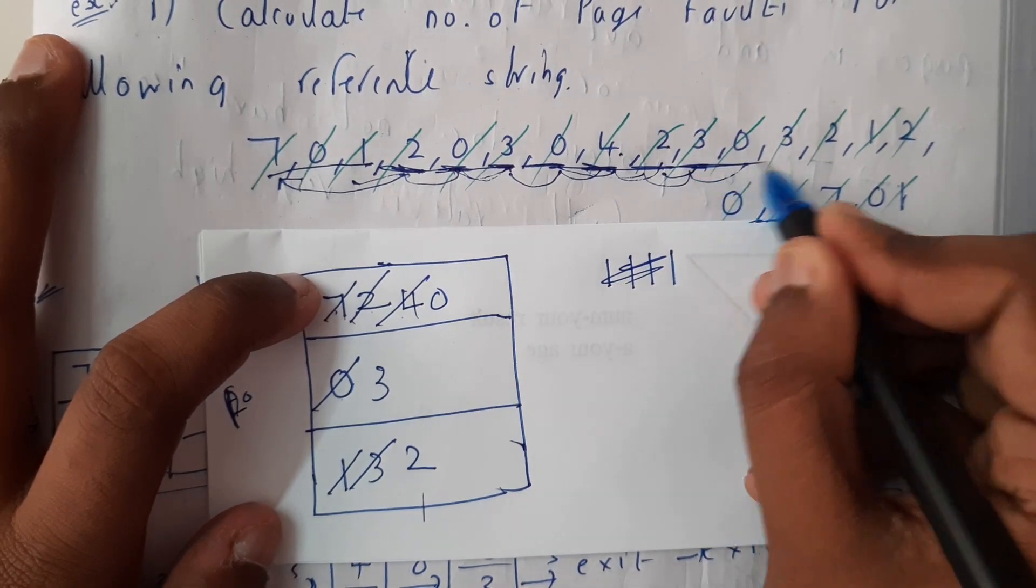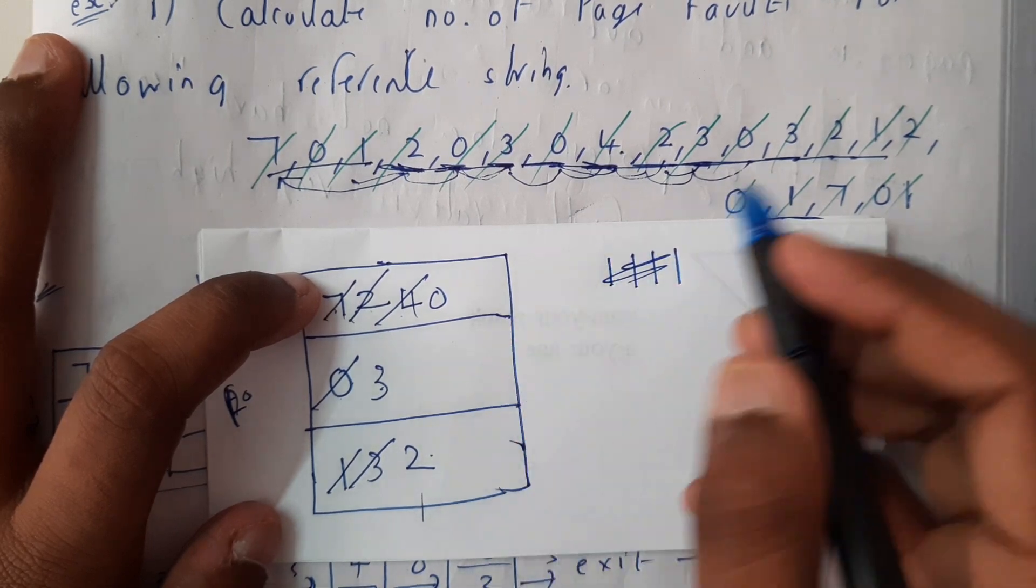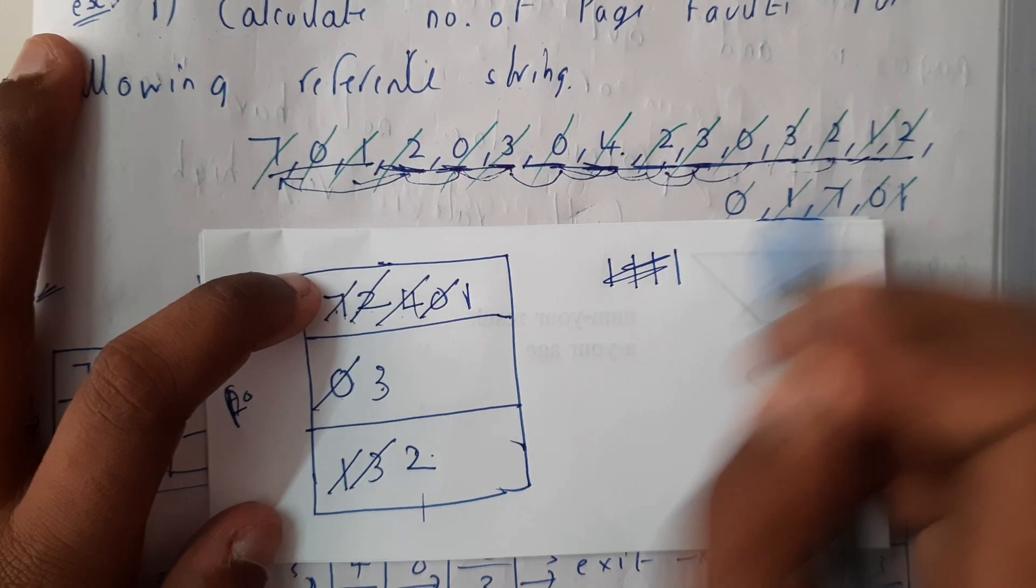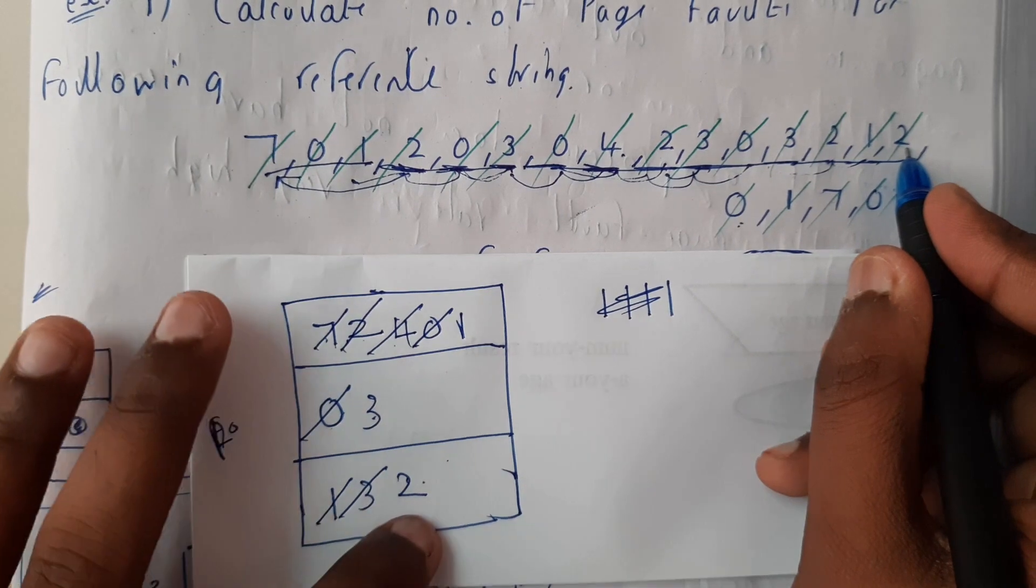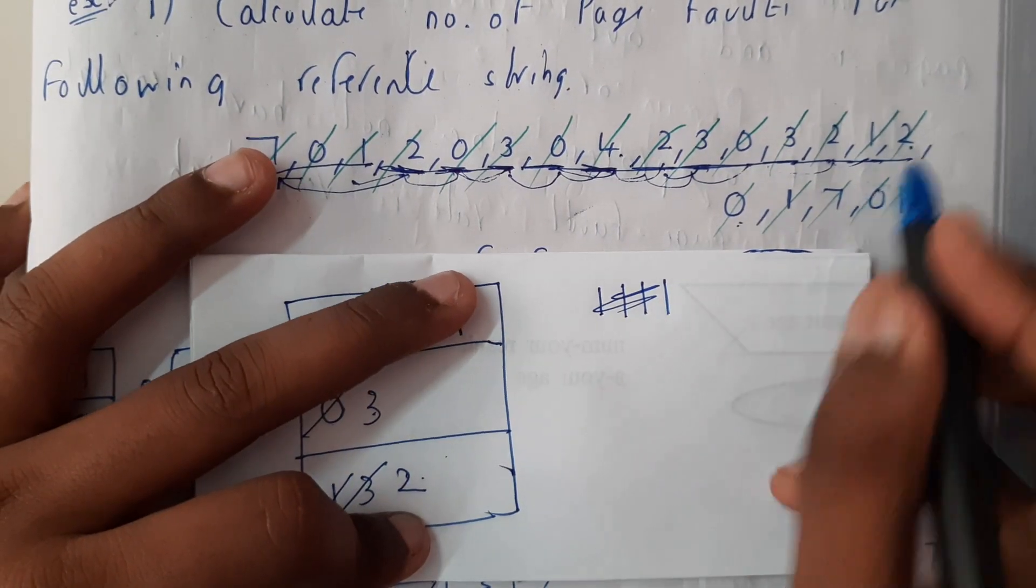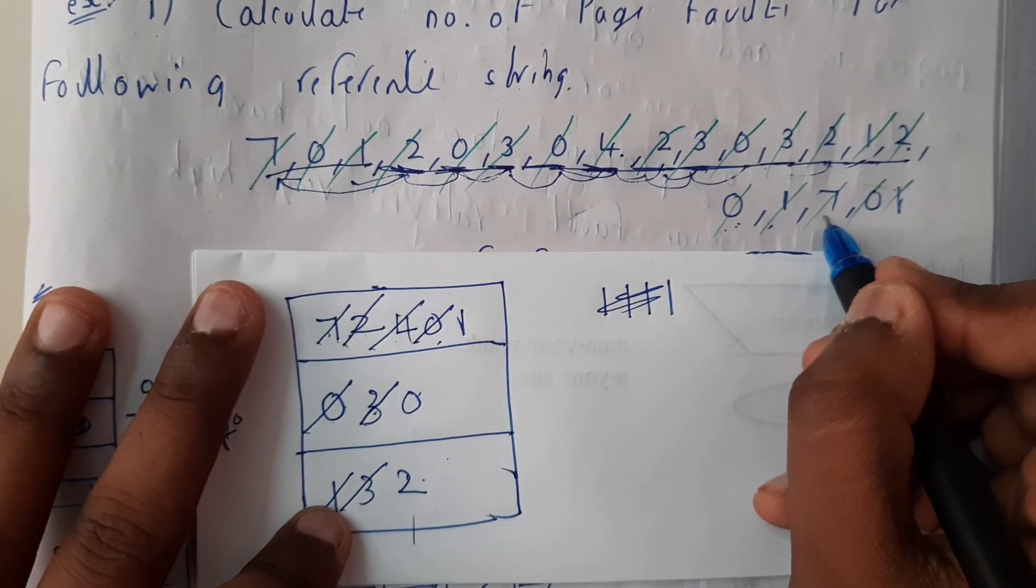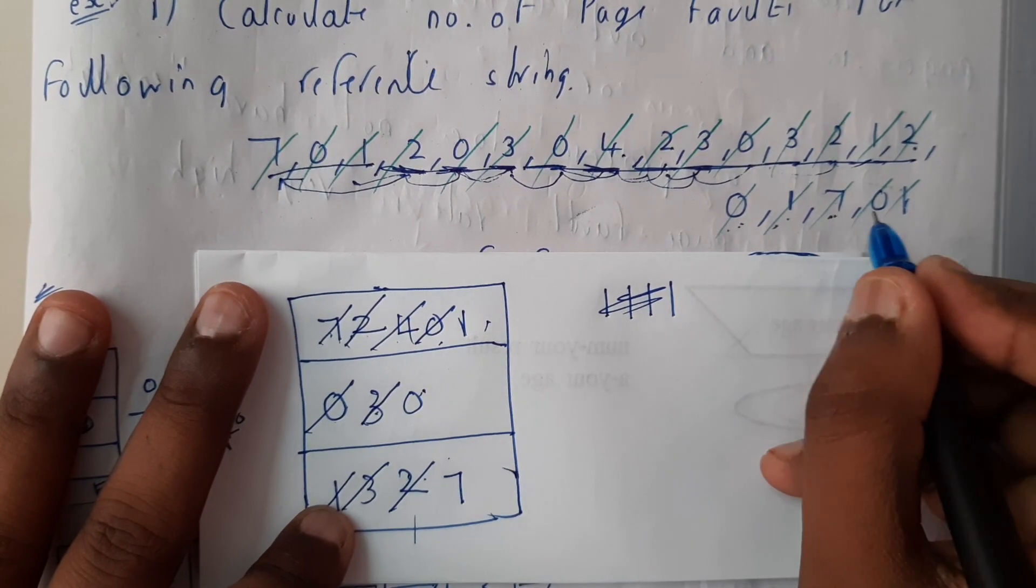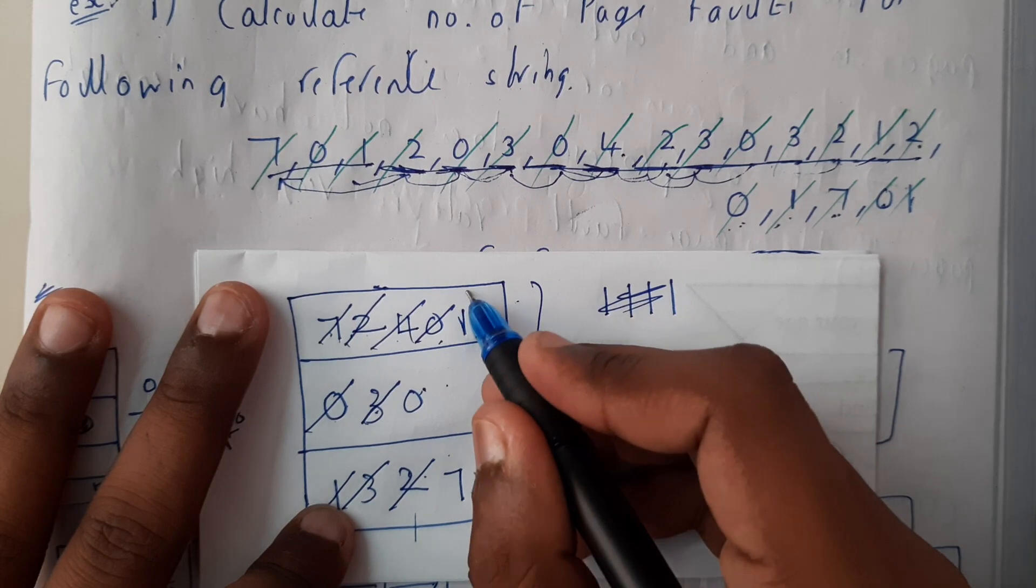After that three - three is already there. Two - two is already there. One - one is not there. Before we used three and two, so in place of zero place one. Again two - two is there. After that zero - zero is not there. Before zero we are having two and before two we are having one, so in place of three we will be placing zero. After that one - one is there. Seven - before seven we used one and zero, so in place of two it will be seven. So this will be your final result: one, zero, seven.